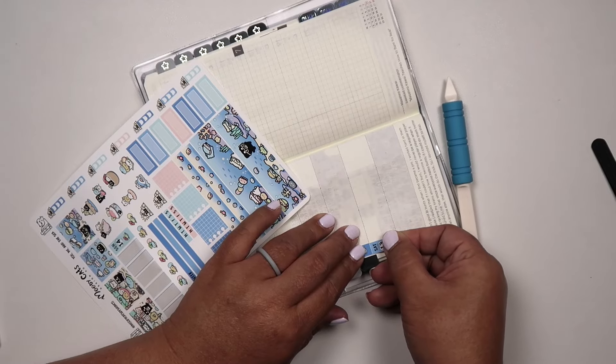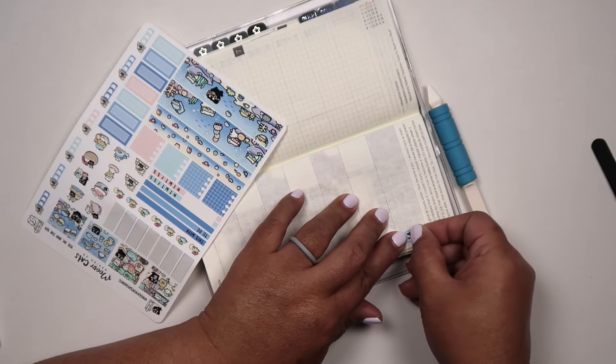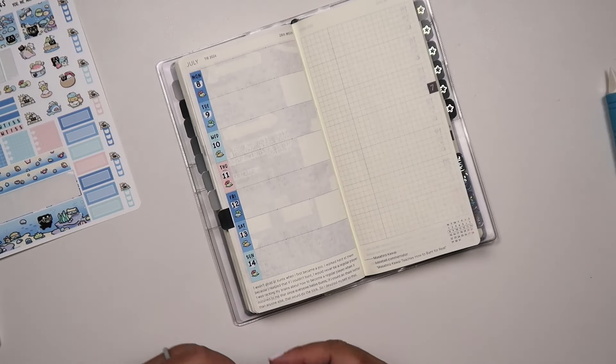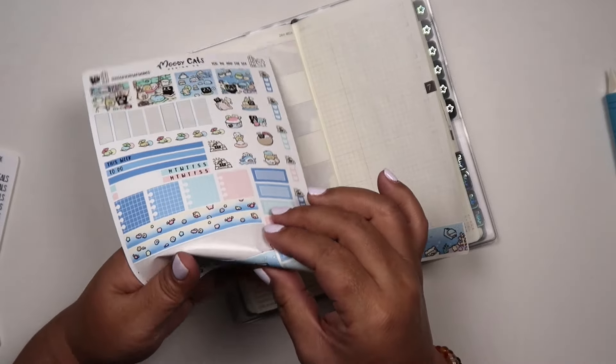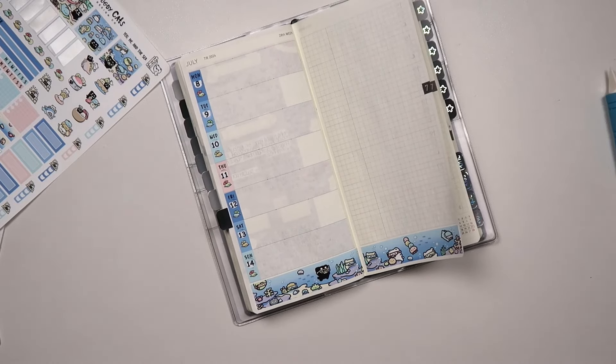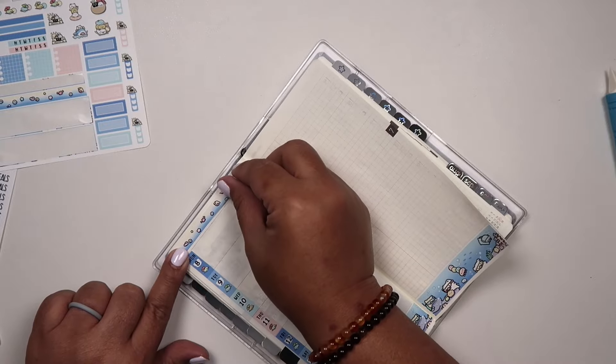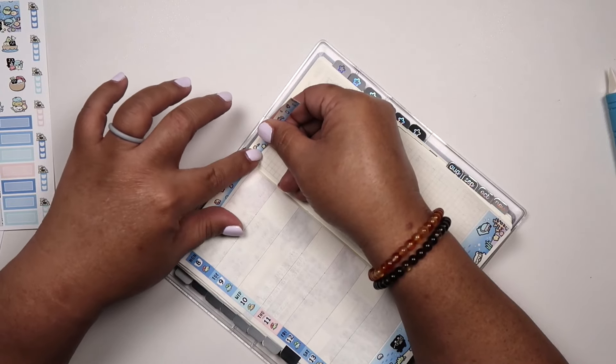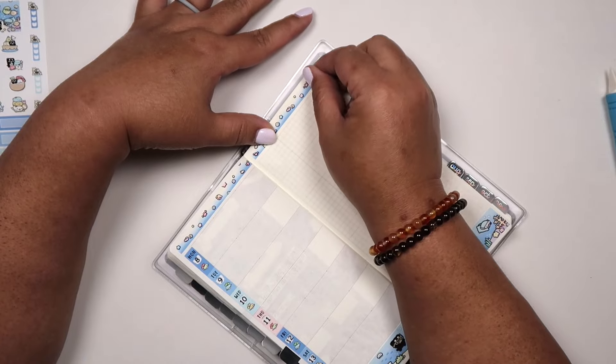Because everything comes in one sheet, like this one right here. It comes with everything. And when I say everything, top and bottom washi for your week spread, it comes with plenty of boxes, plenty of deco stickers, also like when you track what you want to do for the week, like reading or your medication and stuff like that.